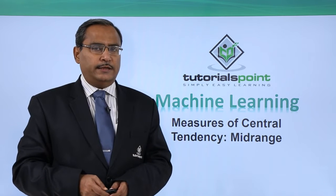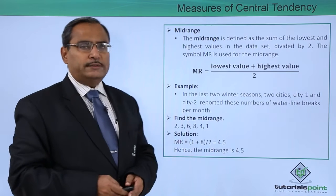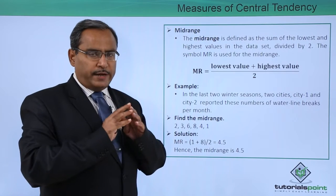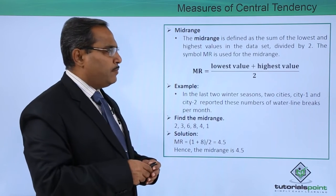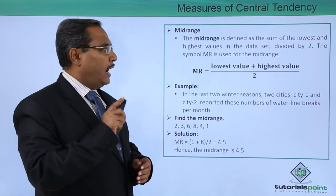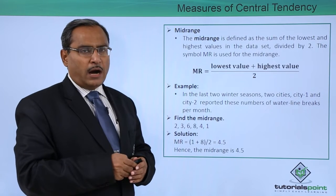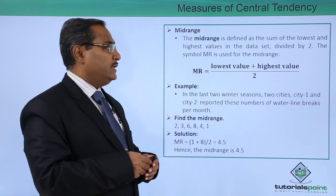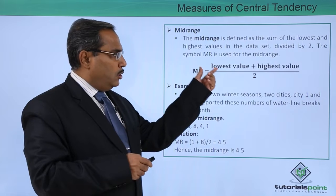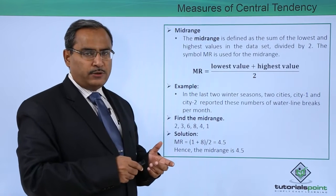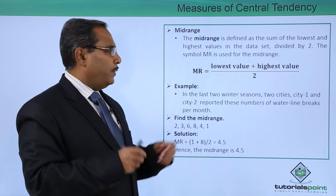Measures of central tendency: mid-range. In this session, we shall discuss what is a mid-range. Mid-range is a very simple thing. Mid-range is nothing but it can be defined as the sum of the lowest and the highest value in the data set, divided by 2. The symbol MR — capital M and capital R — is used to denote the mid-range. So, MR is equal to the lowest value plus the highest value in the data set, whole divided by 2.